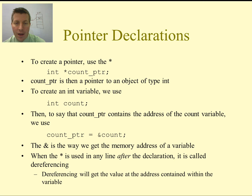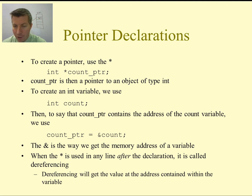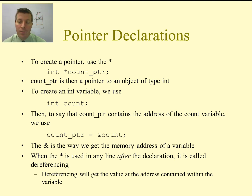So how do we create a pointer? The way that we create a pointer is that we put a star — an asterisk — in front of the name of a variable, and that makes that variable a pointer. The type that is in front of it specifies the type of value that the pointer will be pointing at. So it could be pointing at an integer, a float, a double, a char, or other types of structures. A count pointer is going to be a pointer that points to an object of type int. Then I can say count pointer gets the address of count using the ampersand of count.